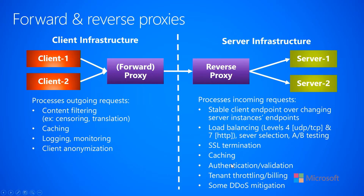You can use reverse proxies to do authentication and validation. Clients make requests — maybe in their HTTP header they have authorization information or some cookie information. The reverse proxy can do the authentication there, and so once anything reaches beyond that reverse proxy, we know that the authentication has happened successfully and that this is a valid operation to be performed.